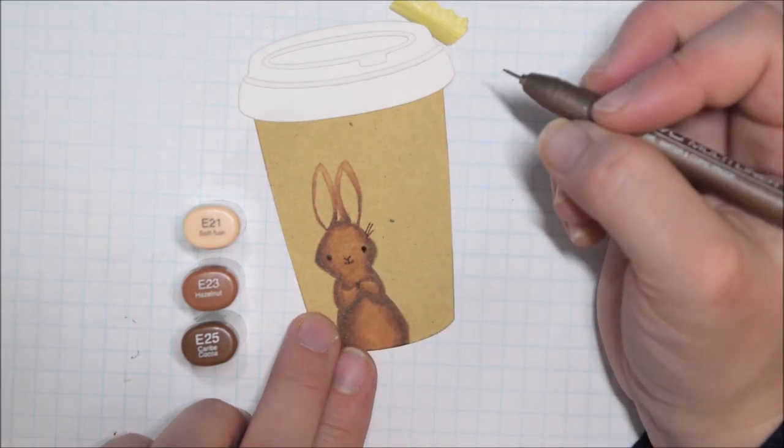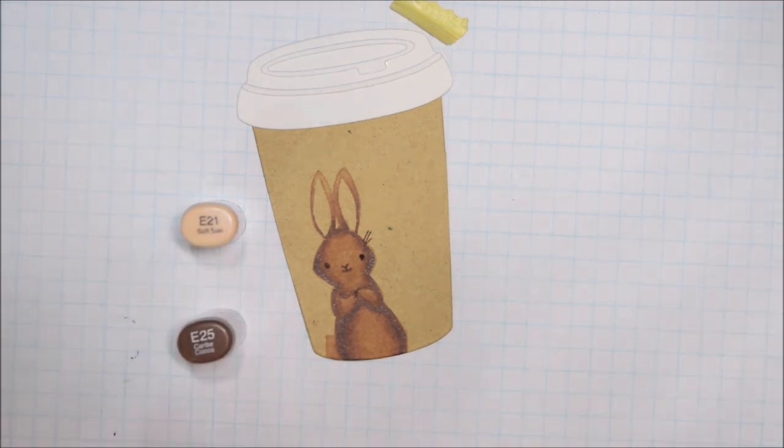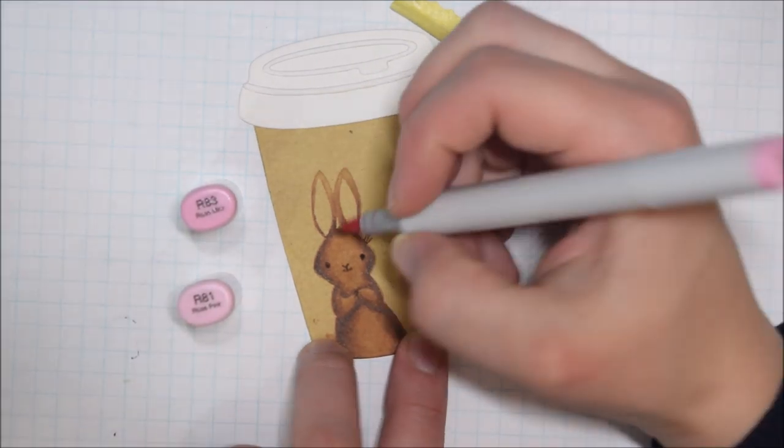Rather than letting that E25 be like a big blending area, it's mostly just a line around the stamp lines for me, and I felt like that worked out well.